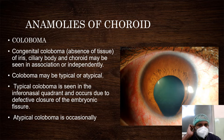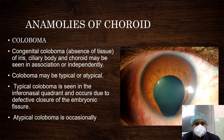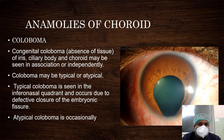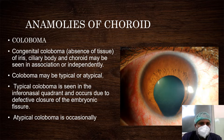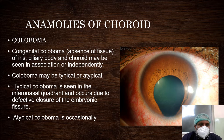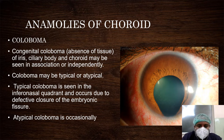Now we will go to anomalies of the choroid. The first anomaly is coloboma. Here you can see a defect in the iris showing iris coloboma. Also, you can see lens coloboma, and in the fundus photograph there will be a coloboma in the fundus or choroid. There are three types of coloboma — congenital coloboma, which is absence of tissue of iris, ciliary body, and choroid, seen in association or independently. Coloboma may be atypical or typical. Atypical is found occasionally, whereas typical is always in the inferonasal quadrant and occurs due to defective closure of the embryonic fissure.